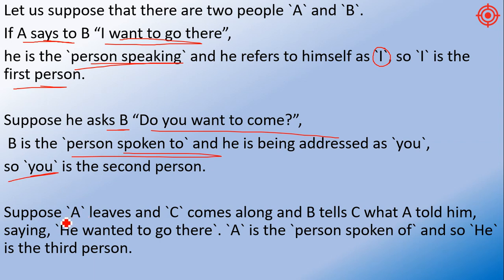Suppose A leaves and C comes along and B tells C what A told him, saying 'He wanted to go there.' A is the person spoken of, and so 'He' is the third person. So three persons are important here and the best person is in direct and indirect speech.